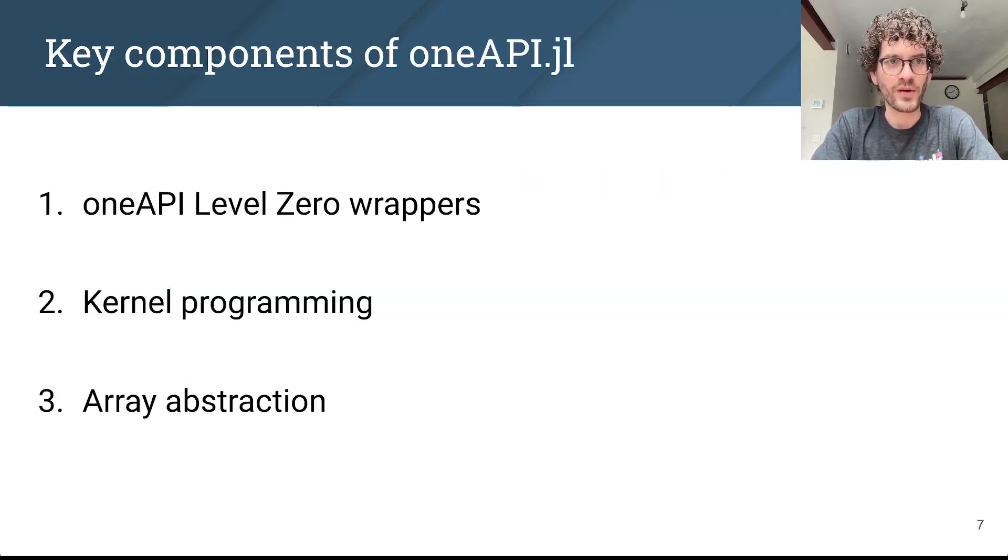So the structure of oneAPI.jl is fairly similar to that of other GPU backends. At increasing level of abstraction, there's first wrappers for the low-level library, level zero. Then there's a programming interface you use to write your own kernels. And finally, there's a user-friendly array abstraction. So let's have a brief look at each of these.